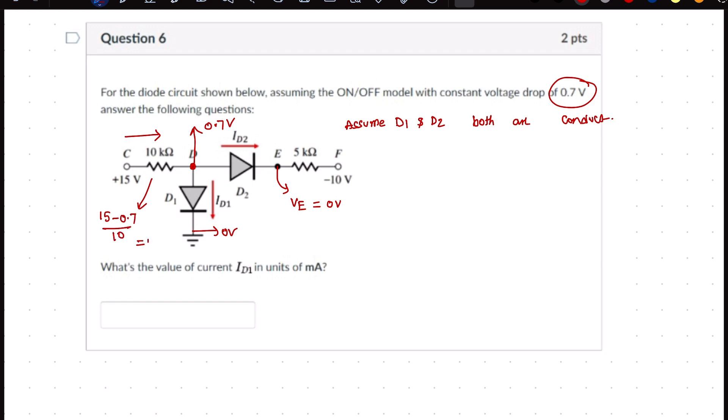Here VE is 0 volts, so the current flowing through this must be ID2, since both are connected in series. That is (0 - (-10)) / 5 kilohm resistance, so this must be 2 milliamperes. Clearly at point D, the approach current is 1.43 milliamperes.